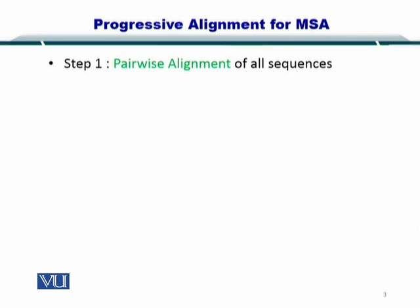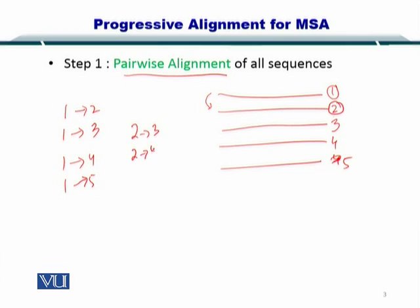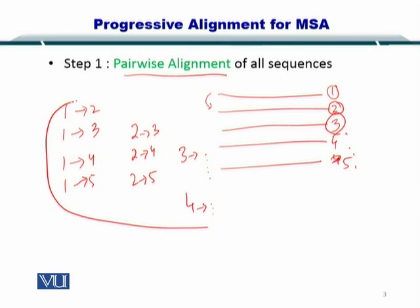As a first step in progressive alignment for MSA, you perform pairwise alignments on all sequences. You take these sequences and align sequence 1 with all other sequences — so you will be aligning 1 with 2, 1 with 3, 1 with 4, and 1 with 5. Sequence 2 will also be aligned with all other sequences, and this process continues until all sequence alignment combinations are created.